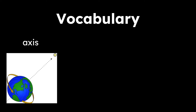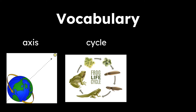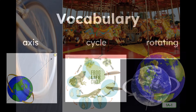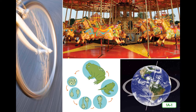Here are some vocabulary words in our read aloud today. The first word is axis: a real or imaginary central line around which an object spins. The next word is cycle: the period of time it takes to complete a sequence of events. And the last word is rotating: turning around a central point. Listen carefully to find out the main topic of this read aloud as well as learn why intense or strong sunlight is so important to life on earth. Let's begin.